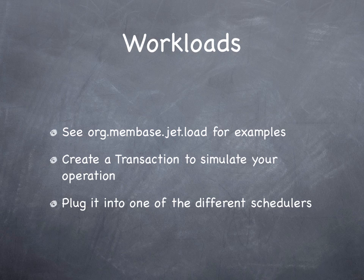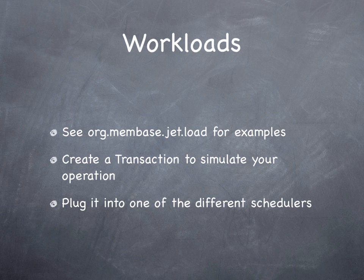In the example, I'm using the parallel scheduler that runs multiple threads in parallel on different transaction objects. I've implemented four different transaction objects to simulate different kinds of load. There are a number of predefined schedulers in JET, but you may always create your own custom one by extending the transaction scheduler and implementing DoRun if you want special behavior.